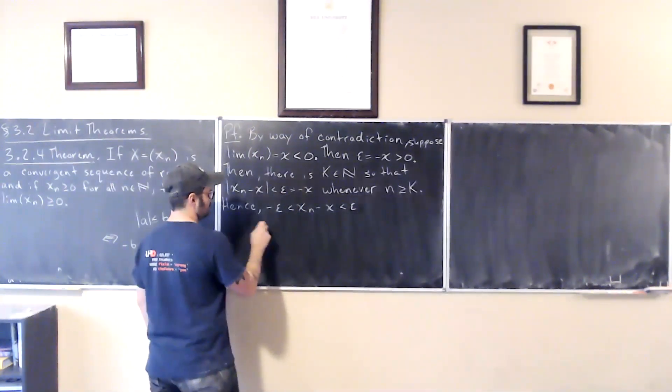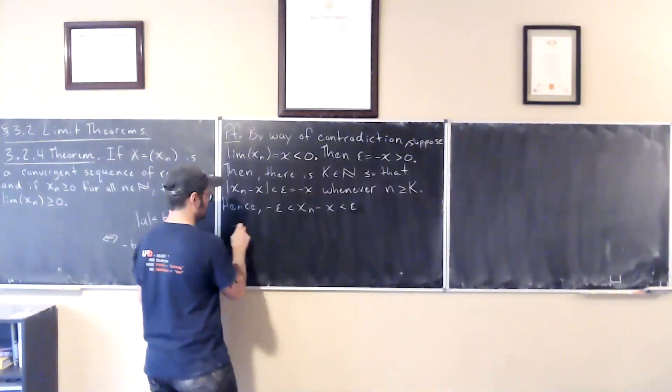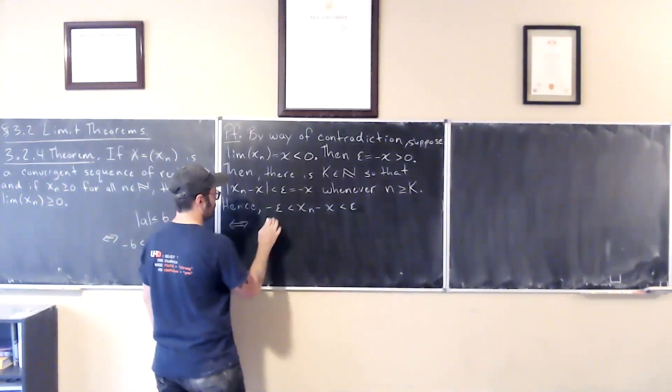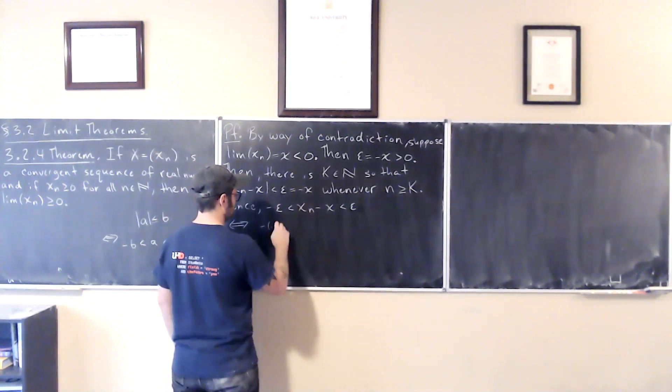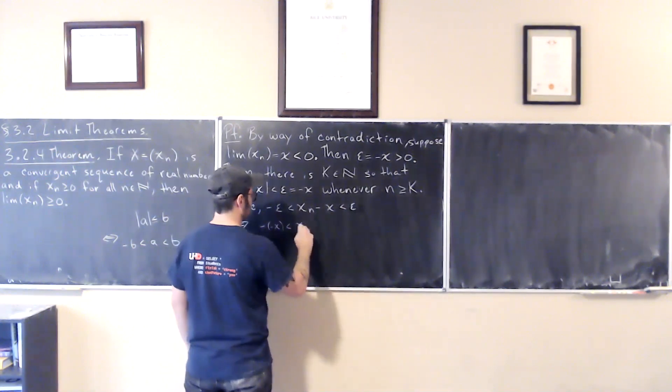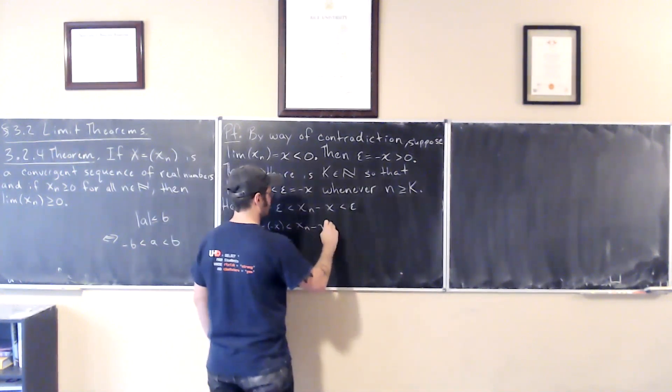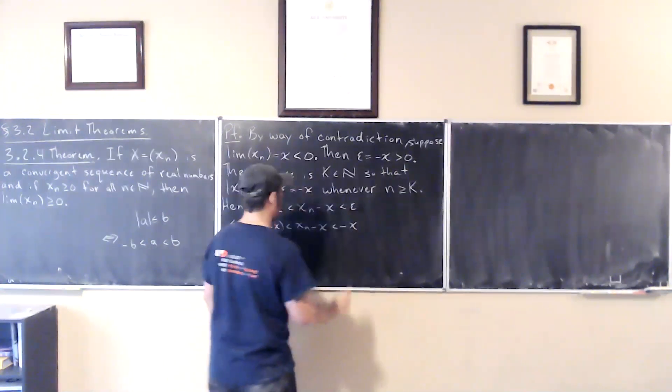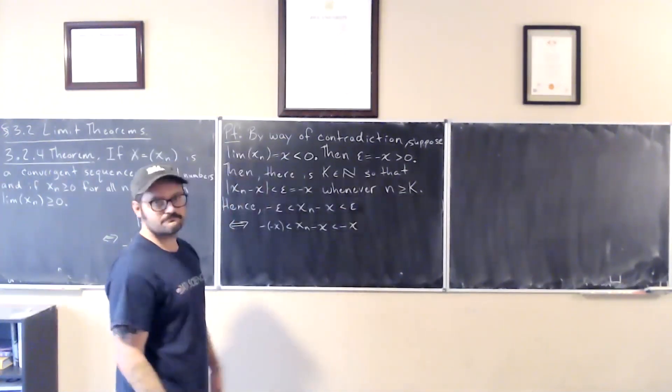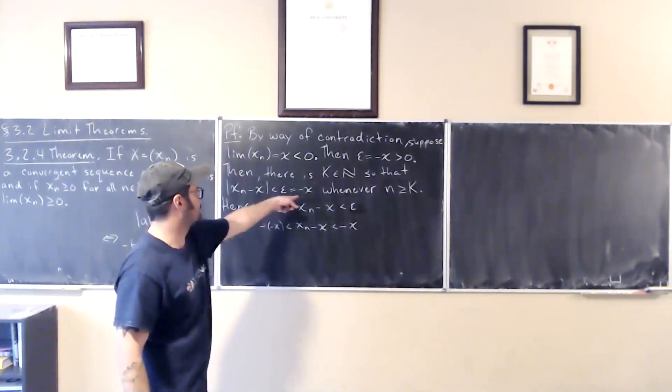Now, absolute value is at most negative x. Recall that if absolute value of a is at most b, then negative b is at most a which is at most b, right? This is a bi-conditional statement. So we know that negative epsilon is at most x_n minus x which is at most epsilon.